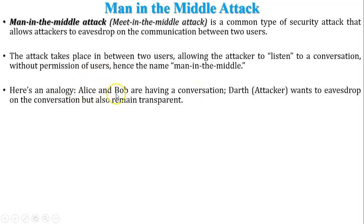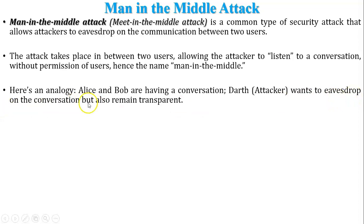Here is an analogy. There are two users — Alice and Bob — both communicating with each other. An attacker called Darth wants to eavesdrop and capture the messages in that conversation, while also remaining transparent, so Alice and Bob have no idea that an attacker is trying to listen to their messages.